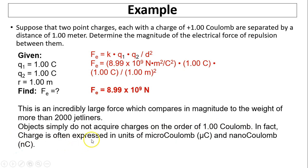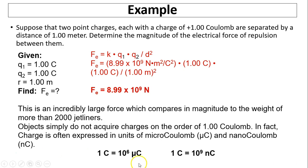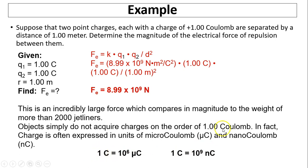In fact, charge is often expressed in units of microcoulombs or nanocoulombs, because 1 coulomb is an extremely large quantity of charge. 1 coulomb equals 10 to the 6 microcoulombs, since 1 microcoulomb is 10 to the negative 6 coulombs. And 1 coulomb equals 10 to the 9 nanocoulombs, since 1 nanocoulomb is 10 to the negative 9 coulombs.